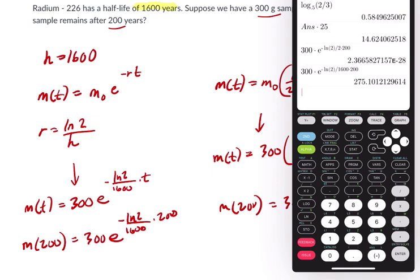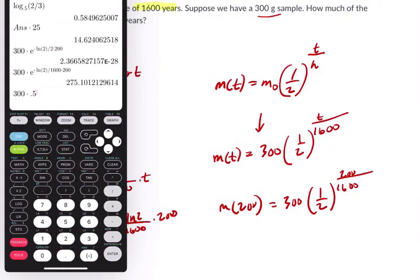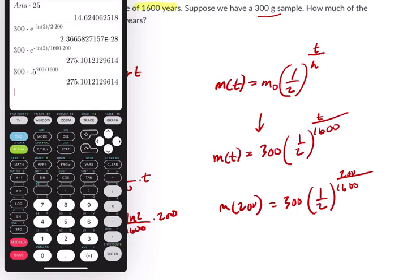In the other case, we have 300 times 0.5 to the power of... You can see it right here, 200 over 1600. Get the same thing.